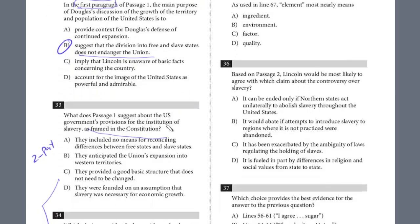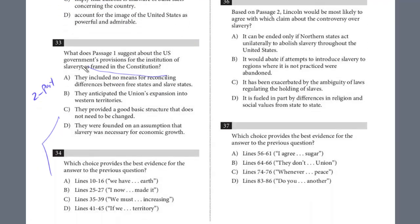For question 33, we want the government's provisions for the institution of slavery. The evidence is in choice B (around line 25). For the answer to question 33: choice A — 'they included no means for reconciling the differences between free states and slave states' — is definitely wrong, because Douglas argues those differences are completely compatible and the Union has prospered. Choice C — 'they anticipated the Union's expansion into Western territories' — is too specific. The correct answer is D: 'they provided the institution of slavery a basic structure that does not need to be changed' — that is Douglas's whole argument.